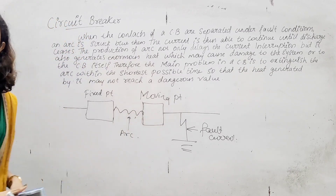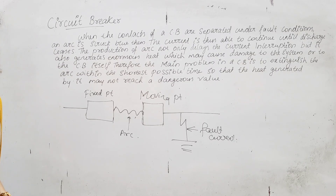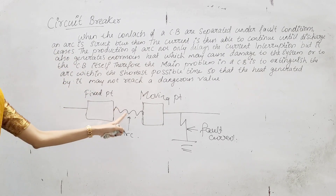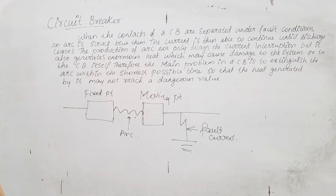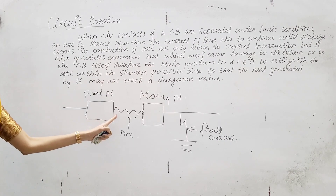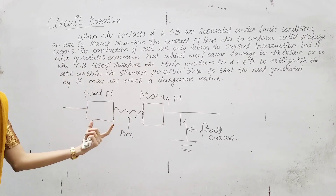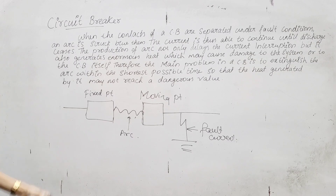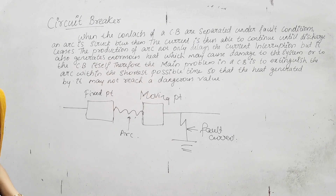When the contacts of the circuit breaker are separated under fault condition, an arc is struck between them — fixed and moving — in the middle the arc forms. The current is thus able to continue flowing until the discharge ceases. This discharge is arc discharge. The production of arc not only delays the current interruption, but it also generates enormous heat which may cause damage to the system.